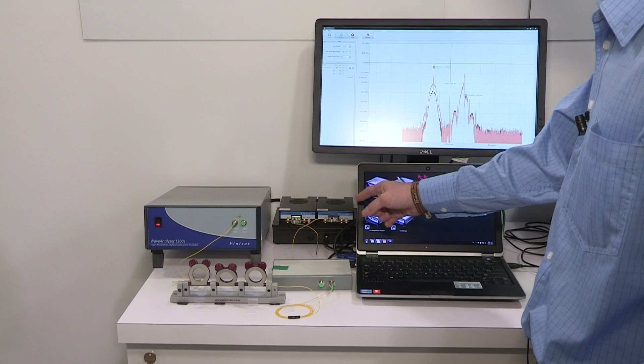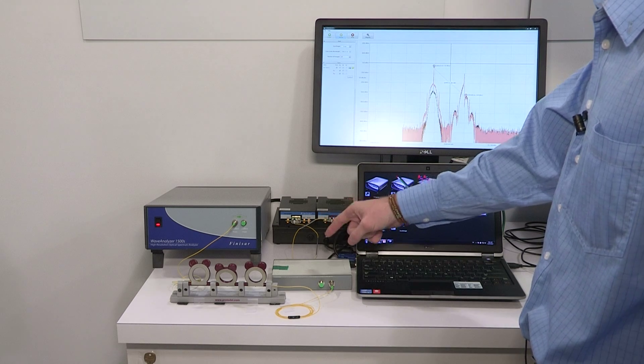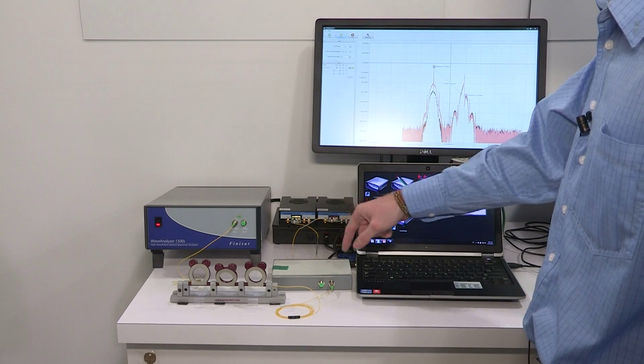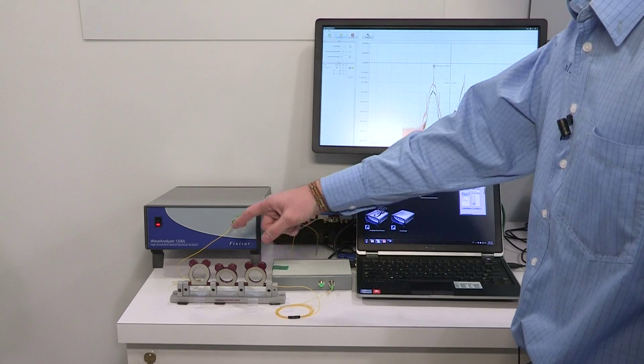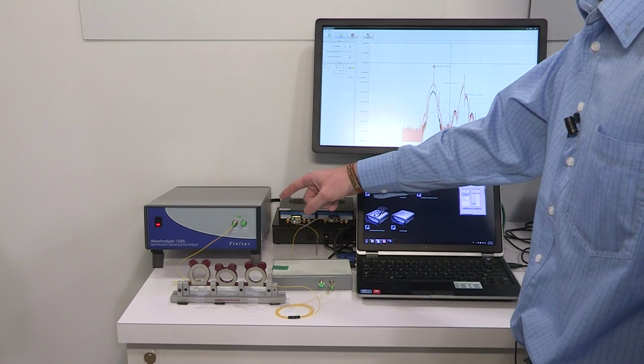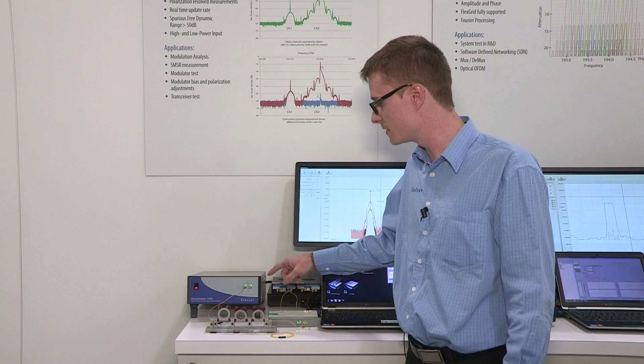Here we have a tunable XFP and an XFP modulated at 10 gigabits per second. These two signals get coupled in with a 50-50 coupler and pass through this polarization controller and into the Wave Analyzer 1500S.